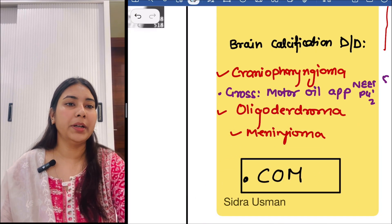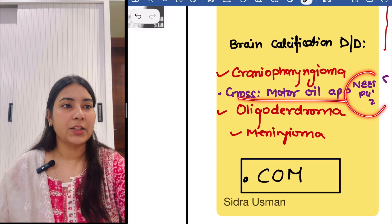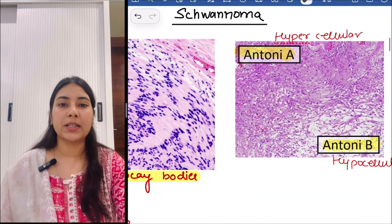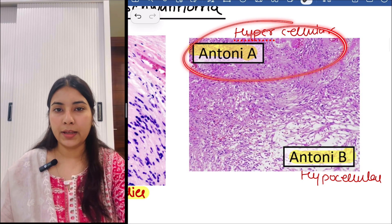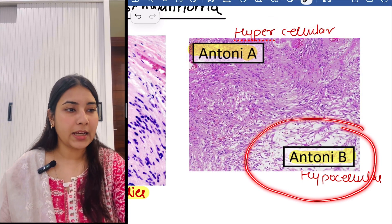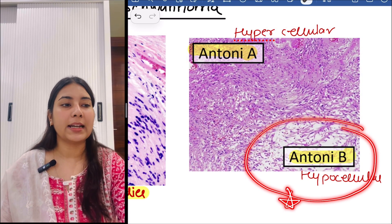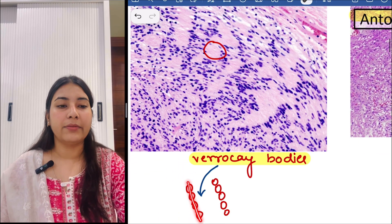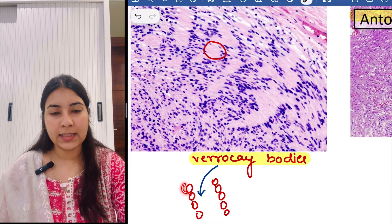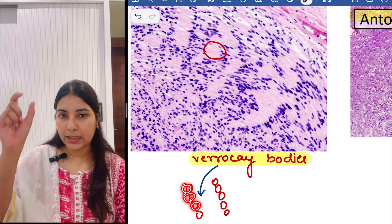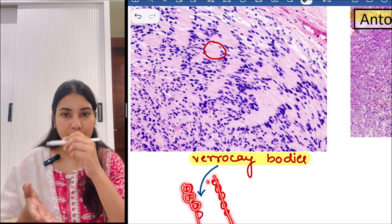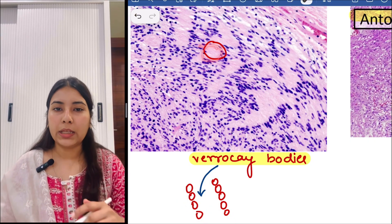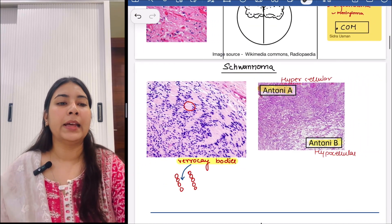Moving forward, we have schwannoma. In schwannoma, there are two areas. If there is a hypercellular area, that is Antoni A area. If the area is hypocellular, that is Antoni B region. Then we have Verocay bodies — when there are two layers of cells, one line and the other line, with a pink area in between. So that is the Verocay body, seen in schwannoma.